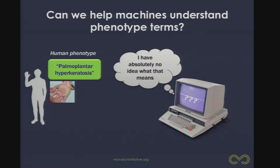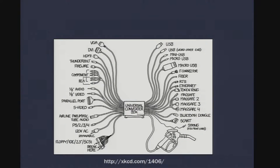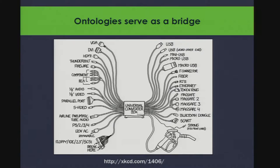How can we help machines understand what these phenotype terms mean? The computer does not know what palmoplantar hyperkeratosis means — it knows it's a string of letters. The answer is that we have a universal converter box, and I would conjecture that is a suite of ontologies. The ontologies can serve as a bridge to help us relate these terminologies across sources and across species.